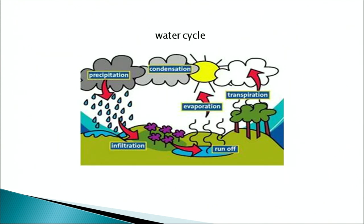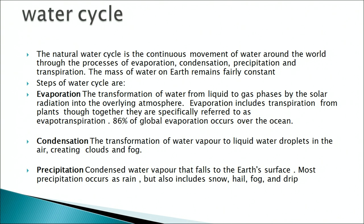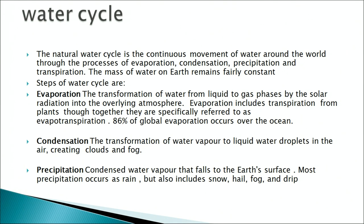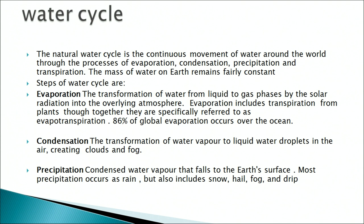This figure shows the cycling of water in nature. The water cycle moves water around the world through the processes of evaporation, condensation, and precipitation. Evaporation is the transformation of water from the liquid phase into vapor; solar radiation drives this process, and the major amount of evaporation takes place over the oceans. Condensation is the transformation of water vapor into droplets in the air, creating clouds and fog. Precipitation is the condensed water vapor that falls to the earth's surface due to gravity, in the form of rainfall, drizzling, hail, or fog.